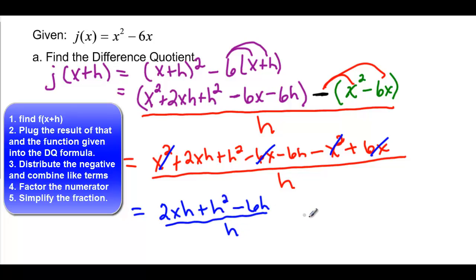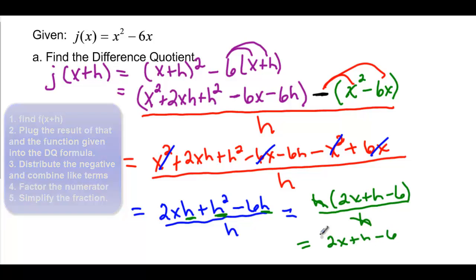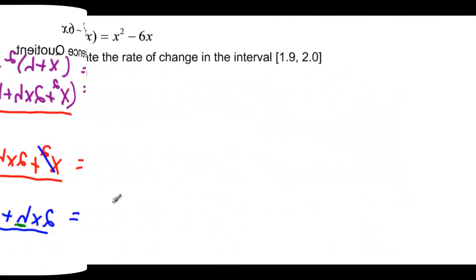Notice they all have h terms, and that's really nice because then we can factor the h out. We have 2x plus h minus 6 all over h. I factored that h. The h's are gone, and we have 2x plus h minus 6 as our difference quotient.